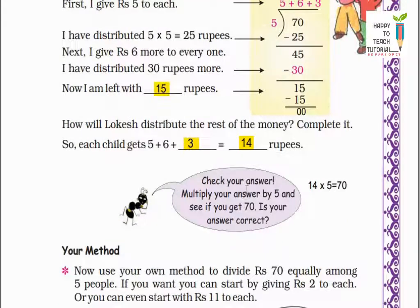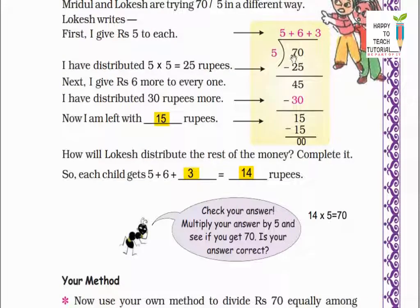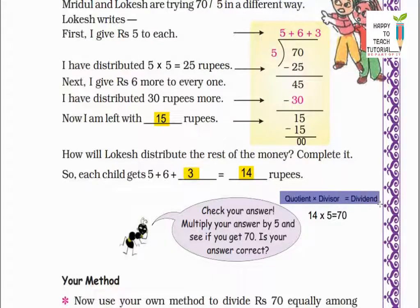Check your answer — aap apna answer check kar sakti hain. Multiply your answer by 5 and see if you get 70. So 14 ko hume 5 se multiply karna padega. So 70 humein answer milta hai. That means our answer is correct. Our formula is: quotient into divisor equals dividend. Is formula ko apply karte hue hum apna answer check karenge.